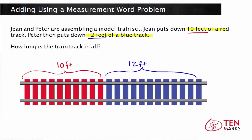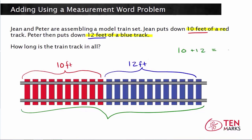So if you want to know what the total length of the train track is — that would be this whole distance here — you would add 10 plus 12. 10 plus 12 equals 22, which means that the train track is 22 feet in all.